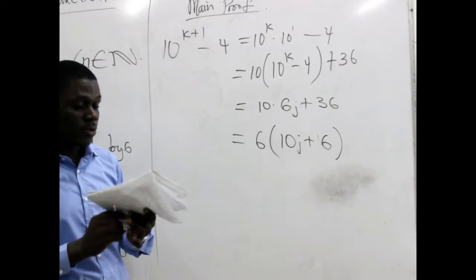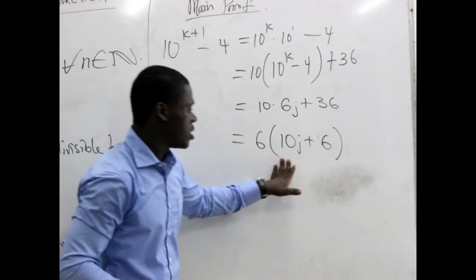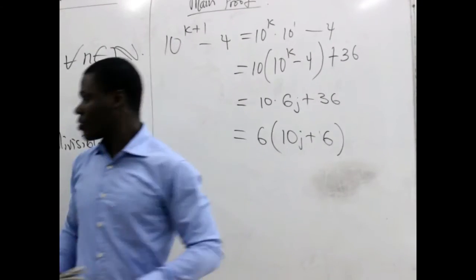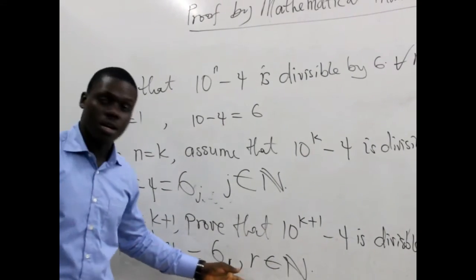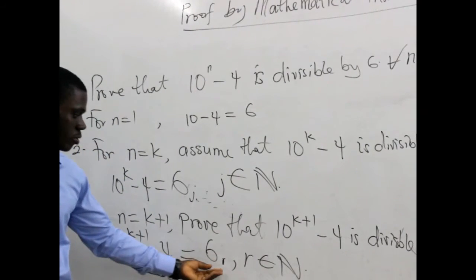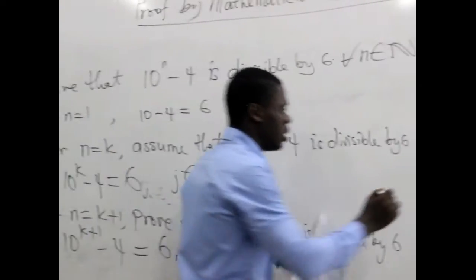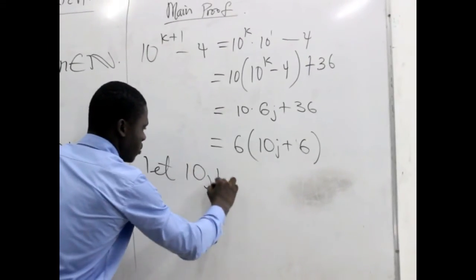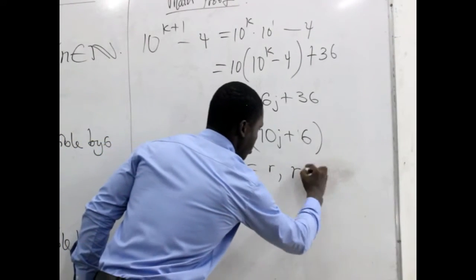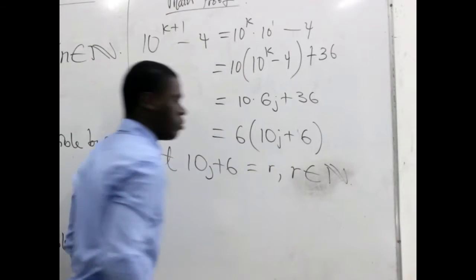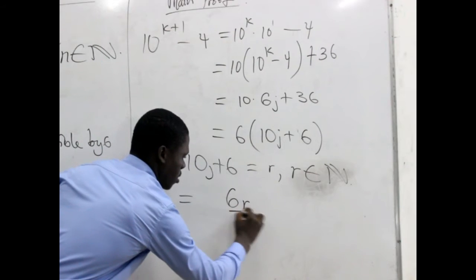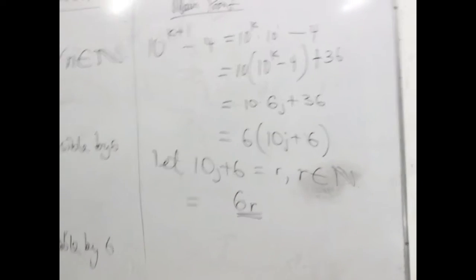Now to conclude the proof, realize that we can let all this, 10j plus 6, be equal to a certain variable r, because we are proving that all this should be equal to 6r. So letting 10j plus 6 be equal to r, where r is a member of the set of natural numbers, we have 6r.